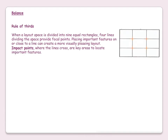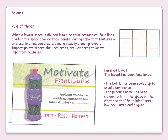When a layout space is divided into nine equal rectangles, four lines dividing the space provide four crossing points. Placing important features on or close to a line can create a more visually pleasing layout. Impact points where the lines cross are key areas to locate important features. In the finished layout of the fruit juice bottle, the bottle has been scaled up to create dominance, the product name has been shrunk to fit the space on the right, and the bottle has been placed on one of these rule-of-thirds lines to create the focal point. Depth has been created.